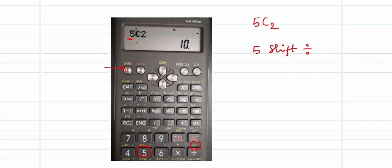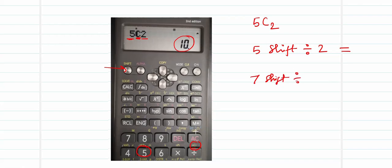When you press the division sign after Shift, the subscript C will appear on your screen. Then press 2. So when you key in 5, then Shift, then division sign, then 2, you will have 5C2 displayed on screen. Press the equal-to sign and the answer — which is 10 — will be displayed. This is how you calculate NCR: press the number, press Shift, press division sign for C, enter the second number, and press equals.